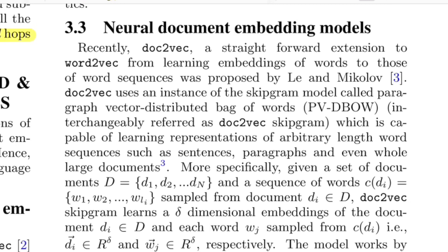The idea of converting a graph into a fixed-length vector is similar to how doc2vec or paragraph2vec systems work. In doc2vec, you're given a sentence or paragraph made up of words, and you want to learn sentence embeddings based on the words that occur in it. More specifically, you have a set of documents d1 to dN, each represented as a sequence of words w1 to wL — either all words from the document or a sampled subset. The goal is to learn delta-dimensional embeddings for each document.